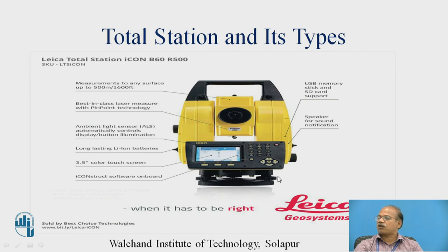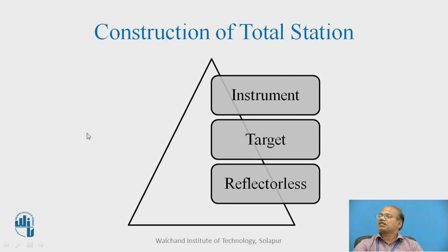Conventionally the tribrach along with the foot screws is shown here. There is a plummet, and on this side you can see the horizontal clamp and horizontal tangent screw. This is another example of the construction of a total station — it primarily consists of an instrument, a reflector, and some instruments wherein reflectorless technologies are also there.